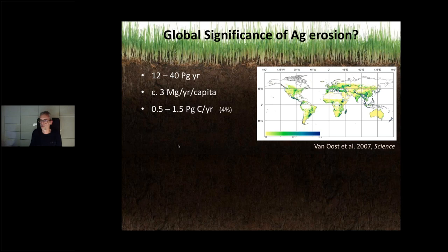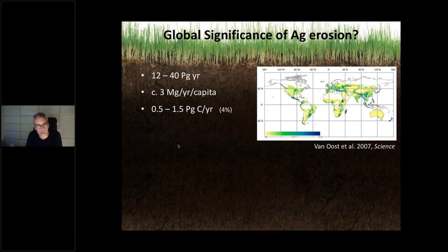I would like to briefly go through the global significance of agricultural erosion. There are many estimates available, with quite a big uncertainty on how important human-induced agricultural erosion actually is. Main estimates range between 12 to 1140 petagrams per year. To put it in a more meaningful way: to produce your food on a daily basis, we erode about three metric tons per year from our fields.